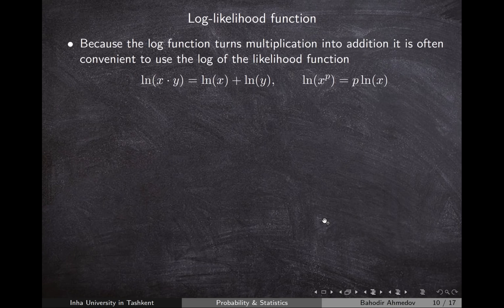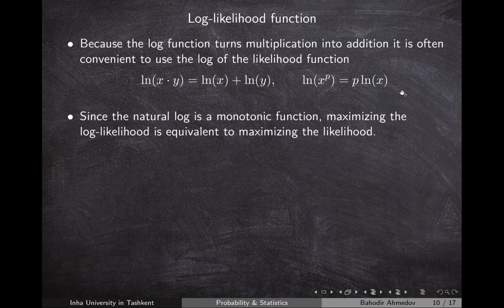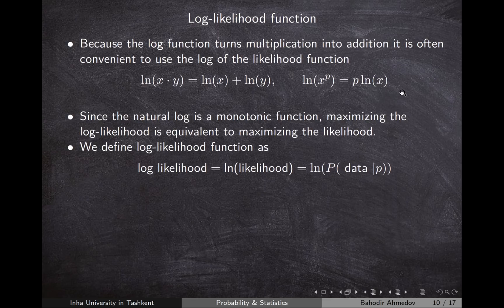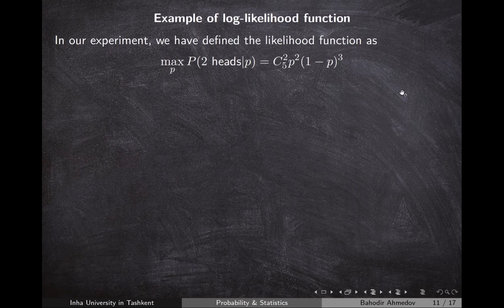Sometimes it is better to use the logarithmic likelihood function because it makes algebraic operations easier. For example, the ln of a product becomes a sum, and ln(x^p) = p·ln(x). Since the natural logarithm is a monotonic function, maximizing the logarithmic likelihood function is equivalent to maximizing the likelihood function itself.